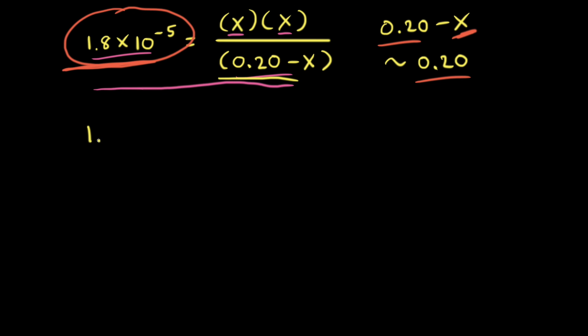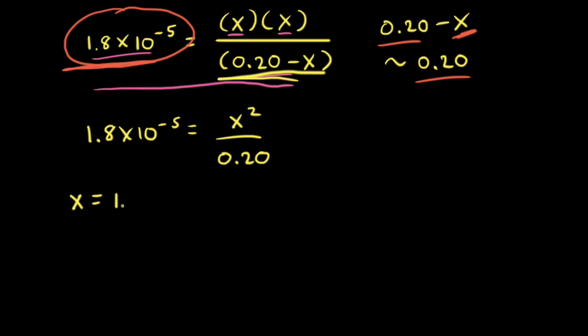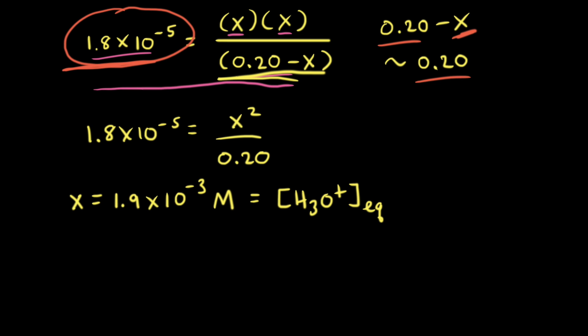Rewriting the equation, we have 1.8 times 10 to the negative fifth equal to X squared over 0.20. Solving for X, we find X is equal to 1.9 times 10 to the negative third, which is the equilibrium concentration of hydronium ions — 1.9 times 10 to the negative third molar. If we had used the quadratic equation, we would also get 1.9 times 10 to the negative third to two significant figures, confirming the approximation was valid.